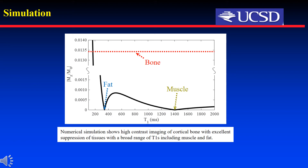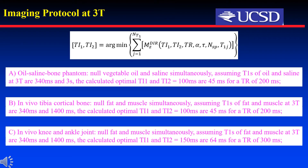The short T2 bone signal curve is also plotted together with fat and muscle for comparison. An oil-saline-bone phantom was made to investigate the feasibility of nulling vegetable oil and saline simultaneously. Assuming T1s of oil and saline at 3T are 340 ms and 3 seconds, the calculated optimal TI1 and TI2 are 100 ms and 45 ms for a TR of 200 ms. The proposed 3D DIR-UTE-CONES sequence was then used for in vivo imaging including tibial, knee, and ankle imaging. T1s of fat and muscle at 3T used here are 340 ms and 1400 ms. For tibial bone imaging, the calculated optimal TI1 and TI2 are equal to the phantom values for a TR of 200 ms. For both knee and ankle joint imaging, the calculated TI1 and TI2 are 150 ms and 64 ms respectively for a TR of 300 ms.